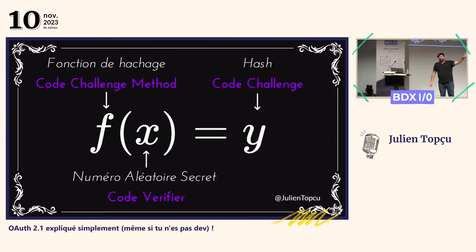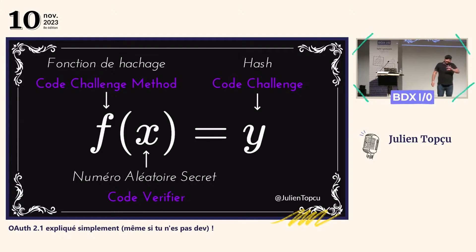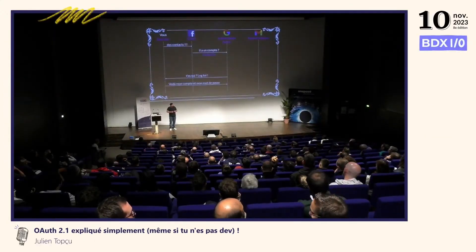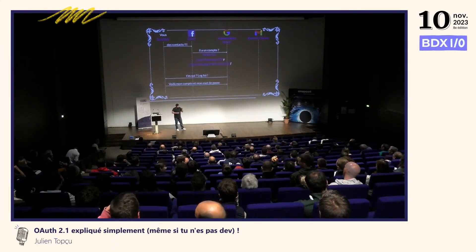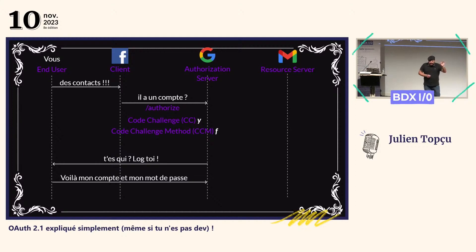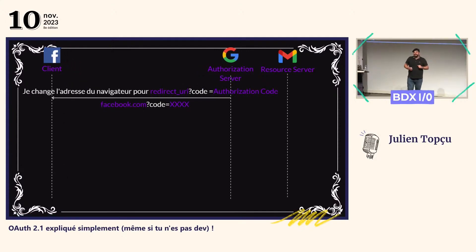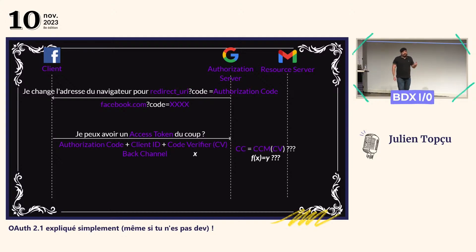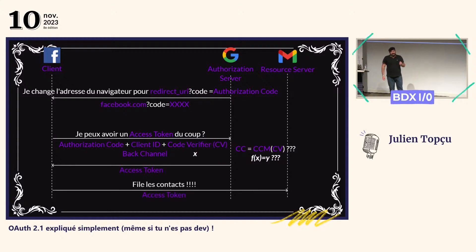Il y a deux fonctions de hachage supportées : SHA-256 et ClearText. Autant vous dire, ne faites pas de ClearText. Parce que ClearText, ça veut dire que f(x) = x. Je ne sais pas pourquoi ils l'ont laissé dans la norme, mais c'était sûrement pour faire des tests. À quel moment ça se passe dans la vie réelle ? C'est au moment où Facebook vous redirige sur Google. Il positionne le y et le f — le code challenge et le code challenge method — que Google va stocker, jusqu'à ce que Facebook initie un back channel avec lui en HTTPS. Là, il va donner son authorization code et son code verifier. Comme ça, il est sûr que c'est Google qui l'a reçu — back channel HTTPS. Google va pouvoir vérifier si f(x) = y. Et si c'est le cas, il va lui émettre l'access token qui va lui permettre de récupérer les contacts.